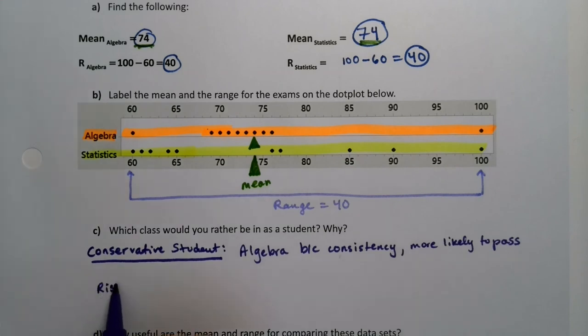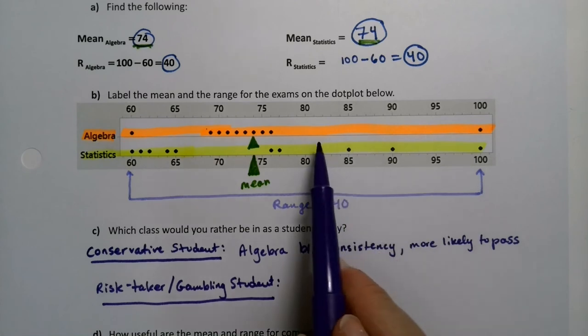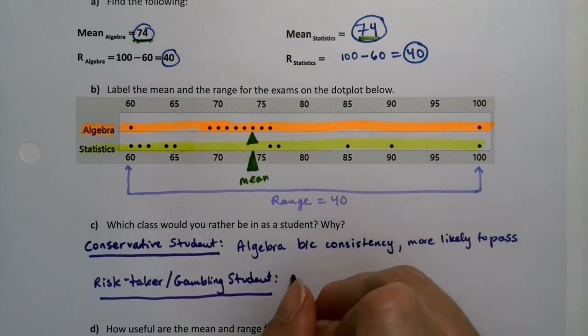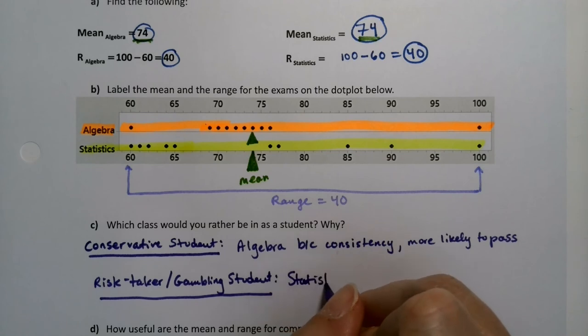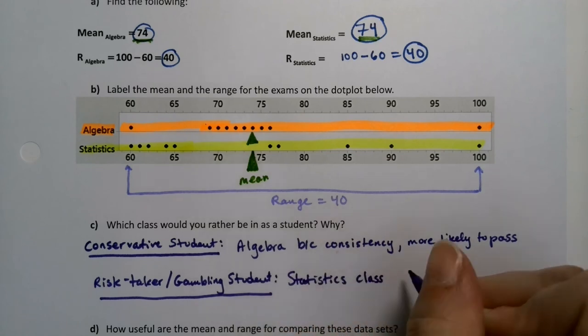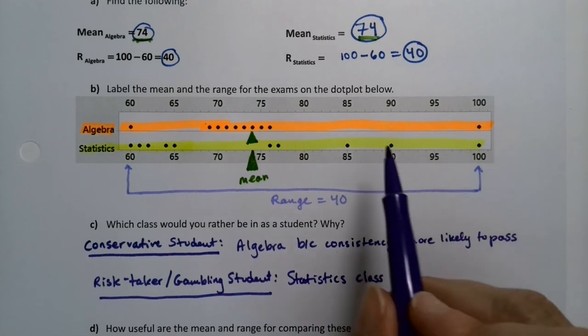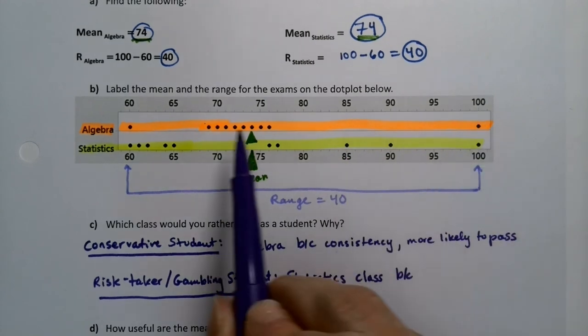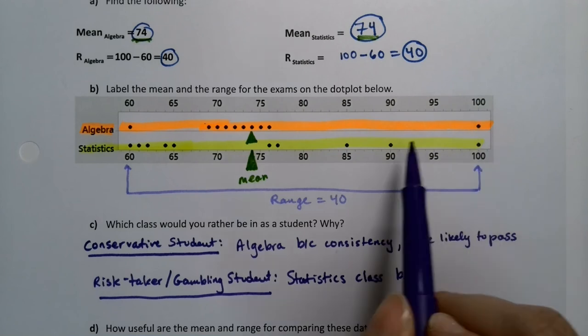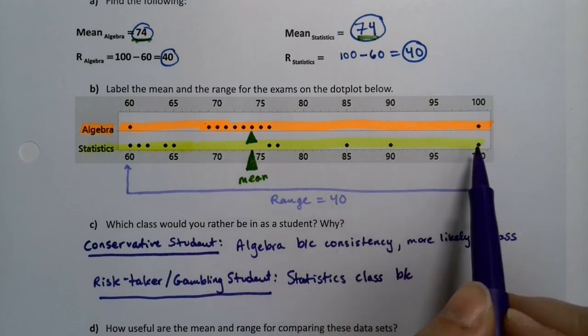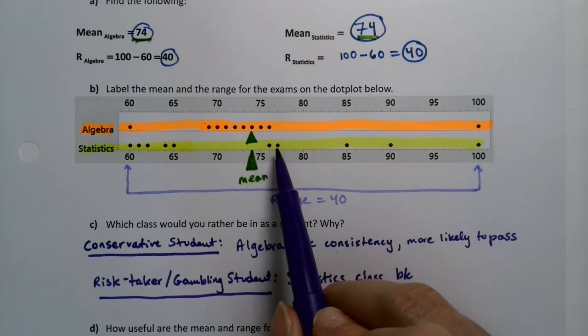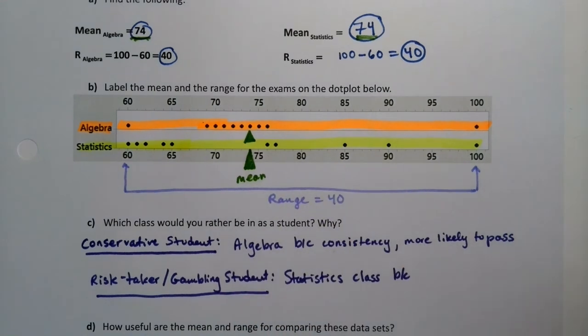Now, if you're a risk taker, if you're a gambler, then you're more likely to take the stats class, because stats can have high rewards over here. So you take the statistics class because you have a good chance. Here, you only have one chance, one out of all of these to be a really high score. Whereas here, you've got the 85, you've got the 90, you've got the 100, you've got the 76. So you have a better chance of a higher score.